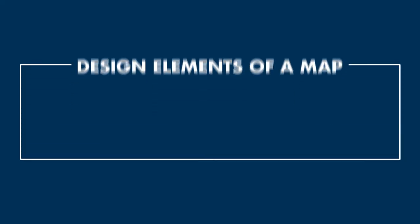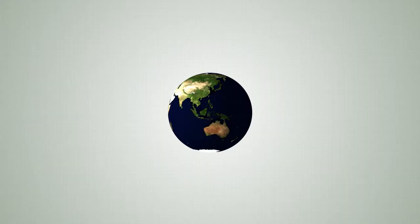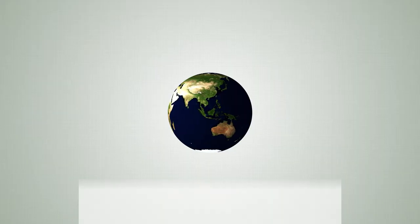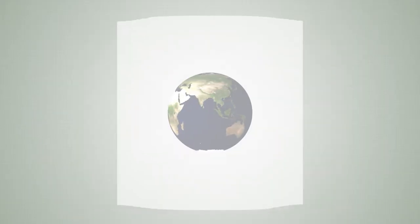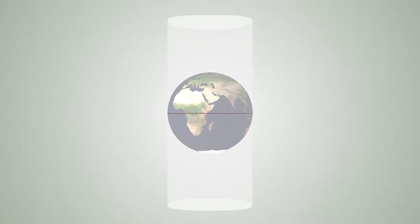For example, projection. Projection is the way that you take the information from a sphere and you transfer it to a flat piece of paper. One of the oldest projections is what we call a Mercator projection, which in essence is taking a flat piece of paper and wrapping it around the globe so that it touches the globe at the equator.